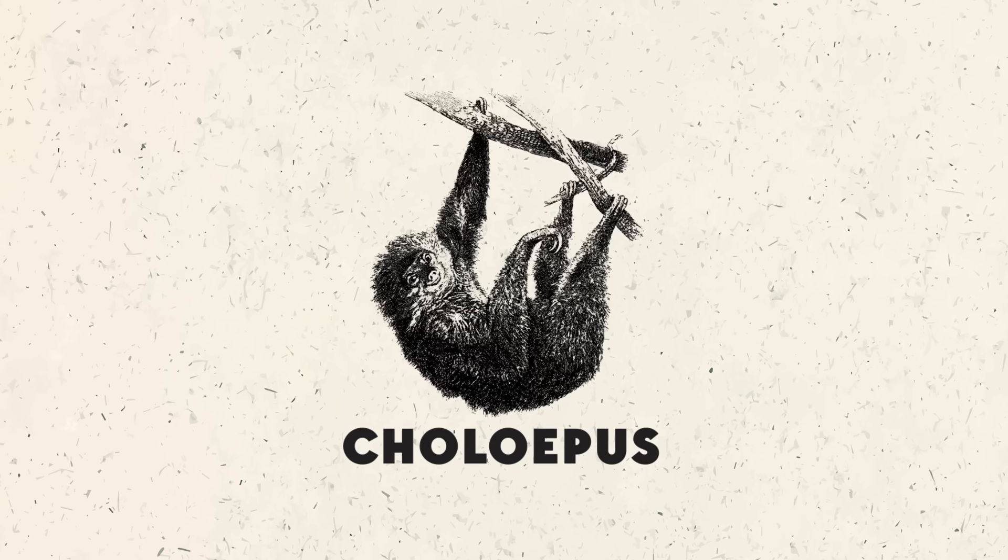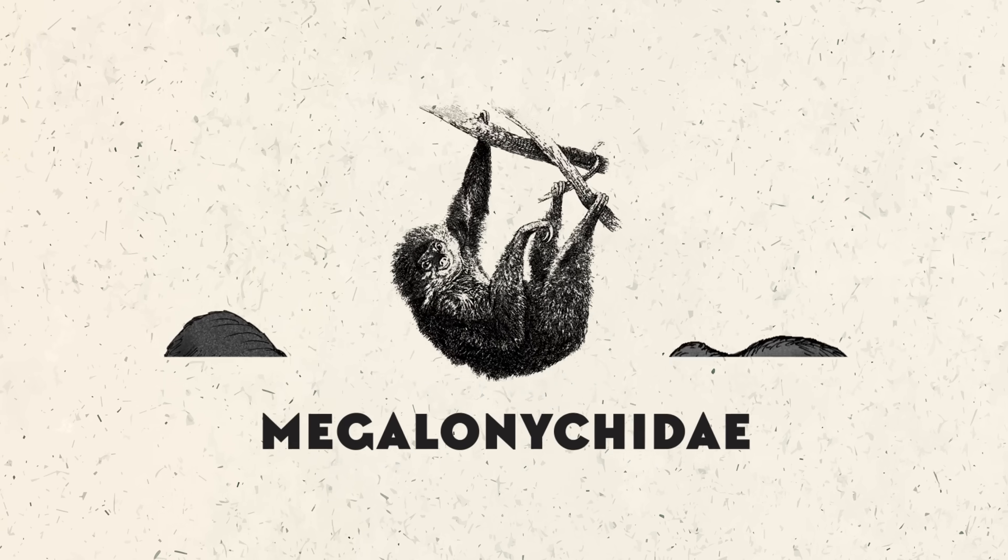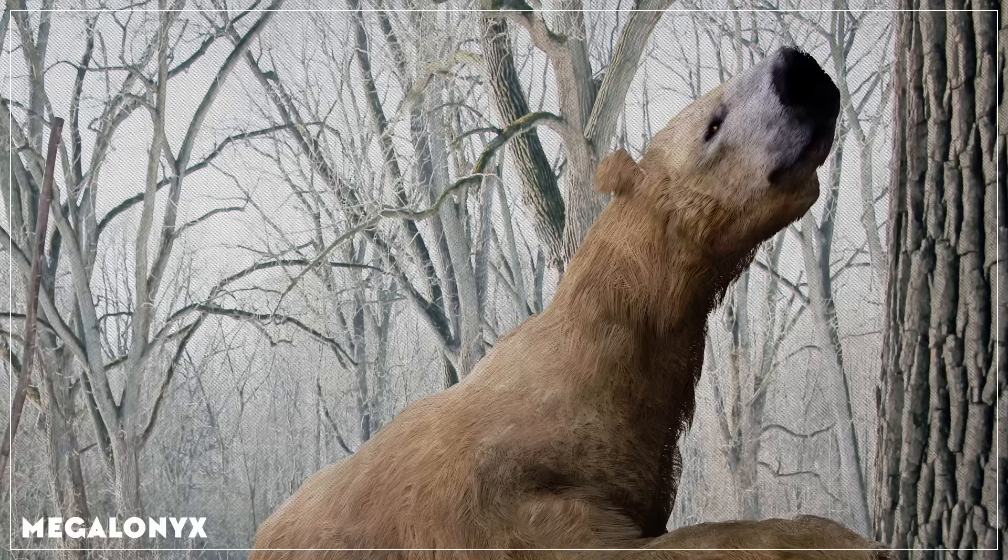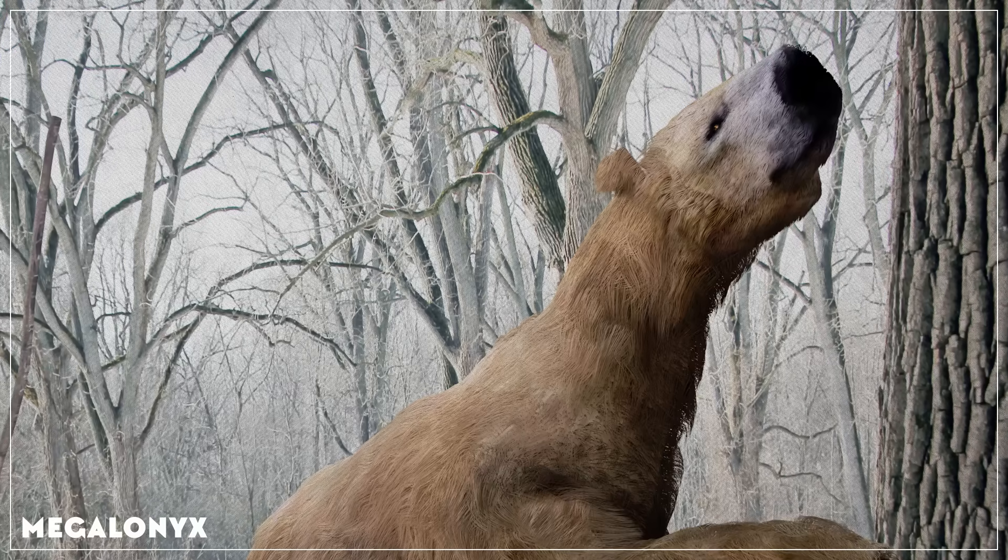In fact, Choloepus is probably a member of Megalonychidae, a family that included some pretty big, bad ground sloths like Megalonyx, which lived in North America as much as 10 million years ago. But Bradypus may be the oldest and most primitive member of all sloths, its lineage having split off from other fossil and modern sloths as much as 30 million years ago. It's so strange that some paleontologists put it into its own family all by itself.